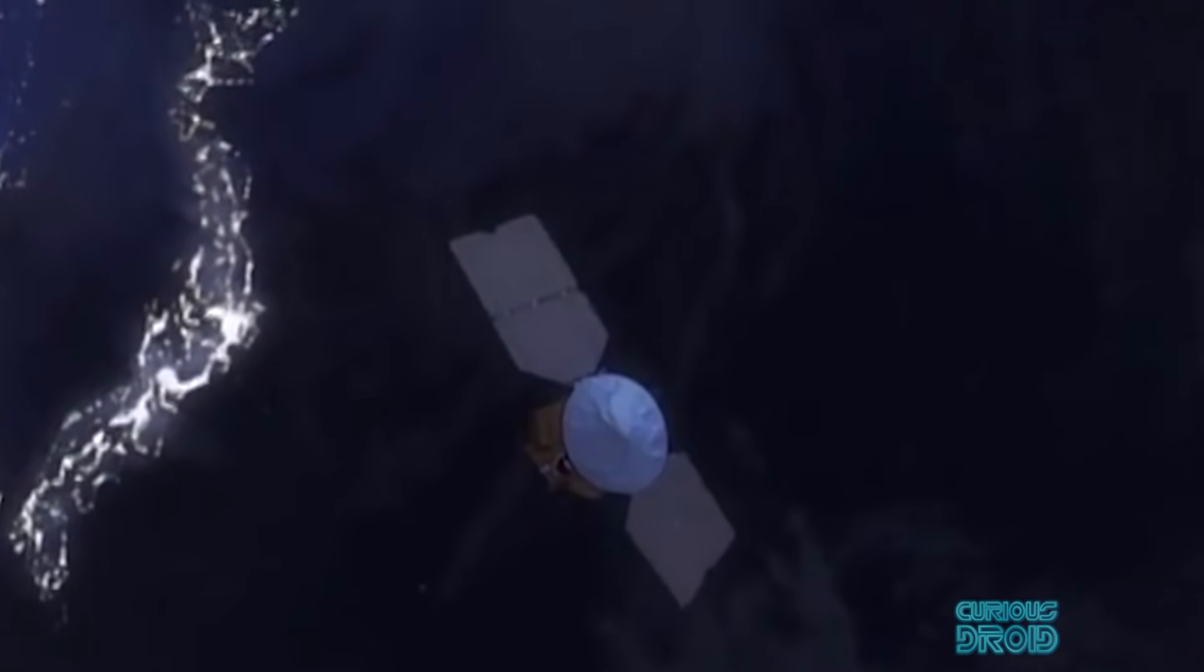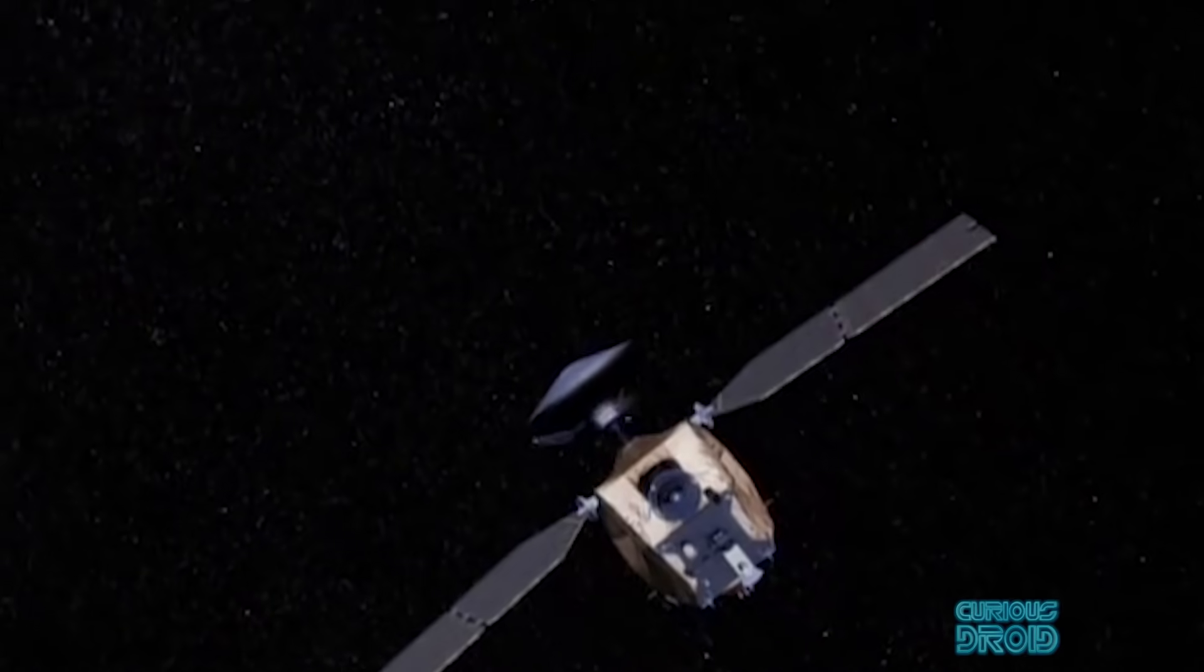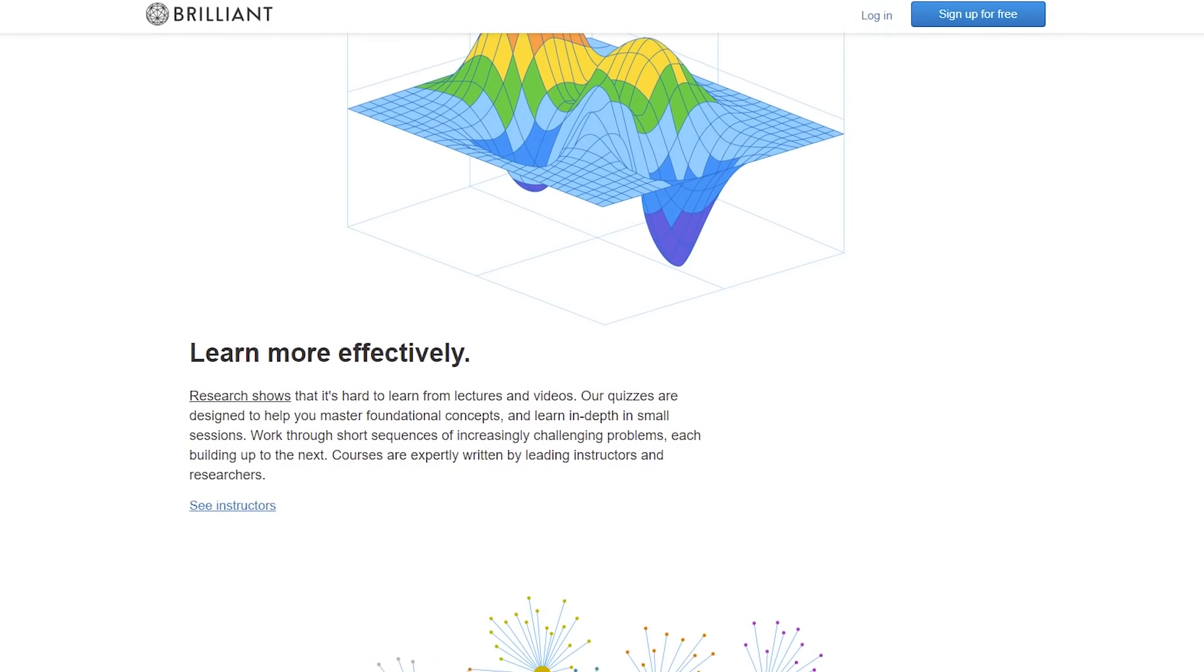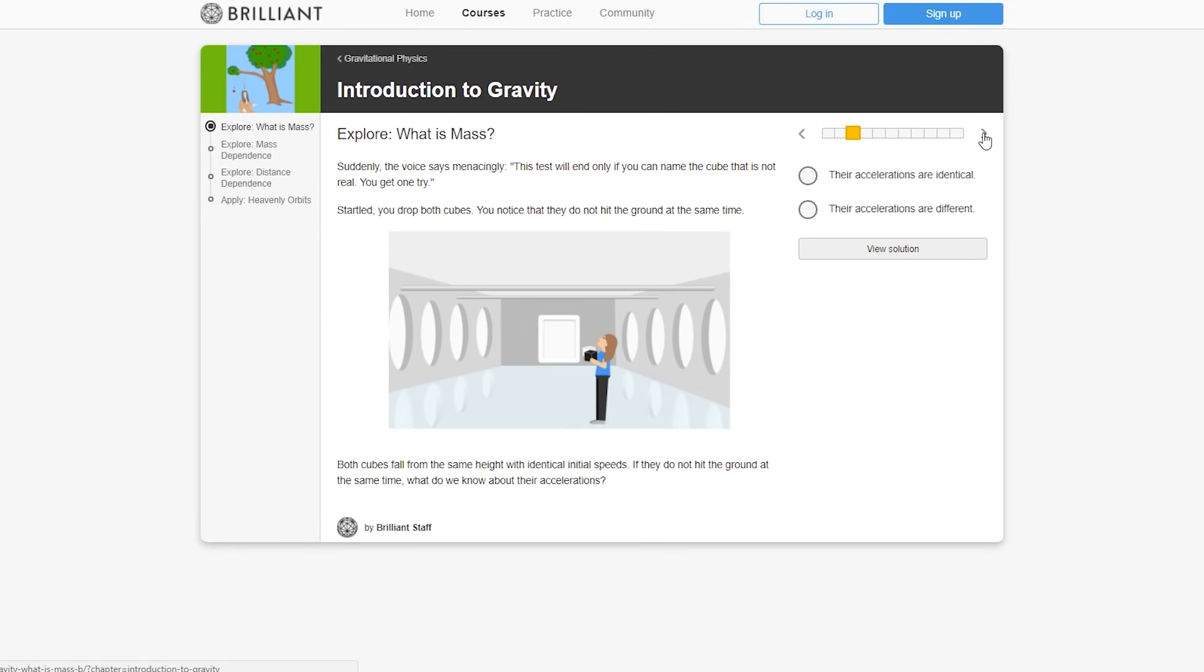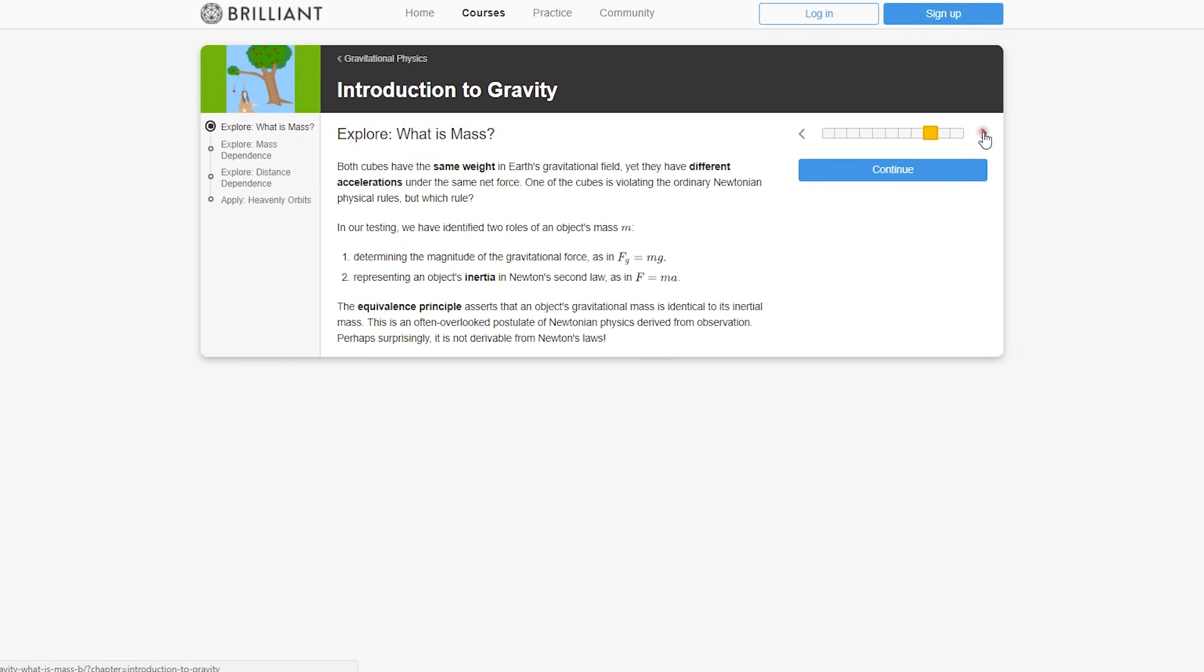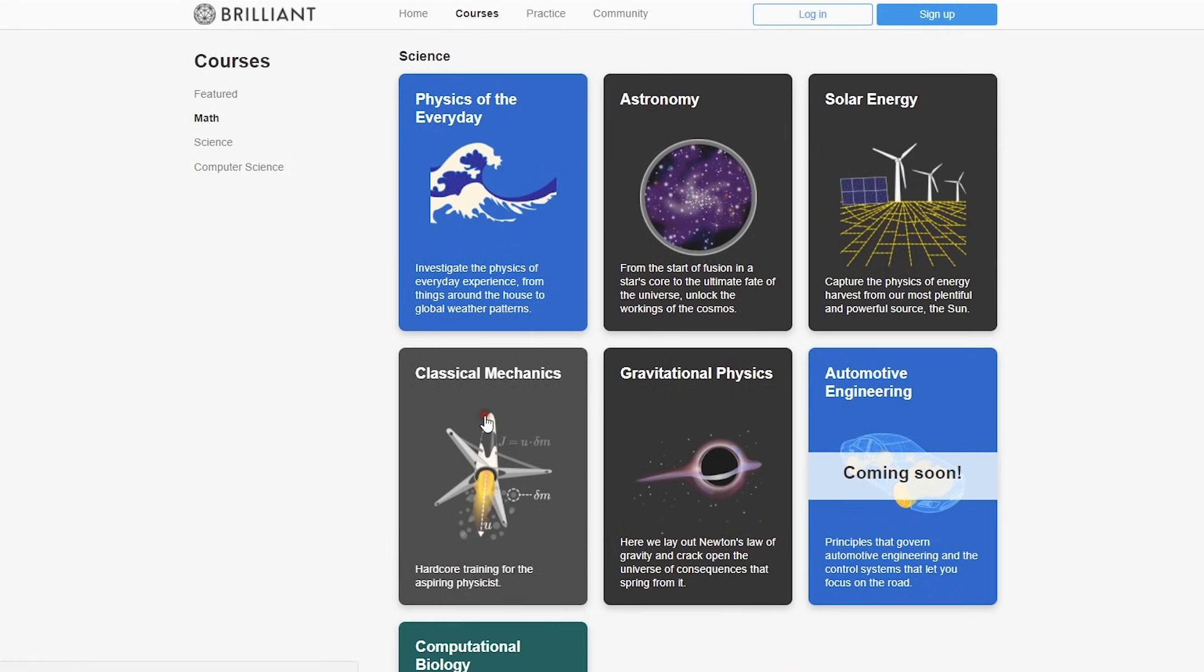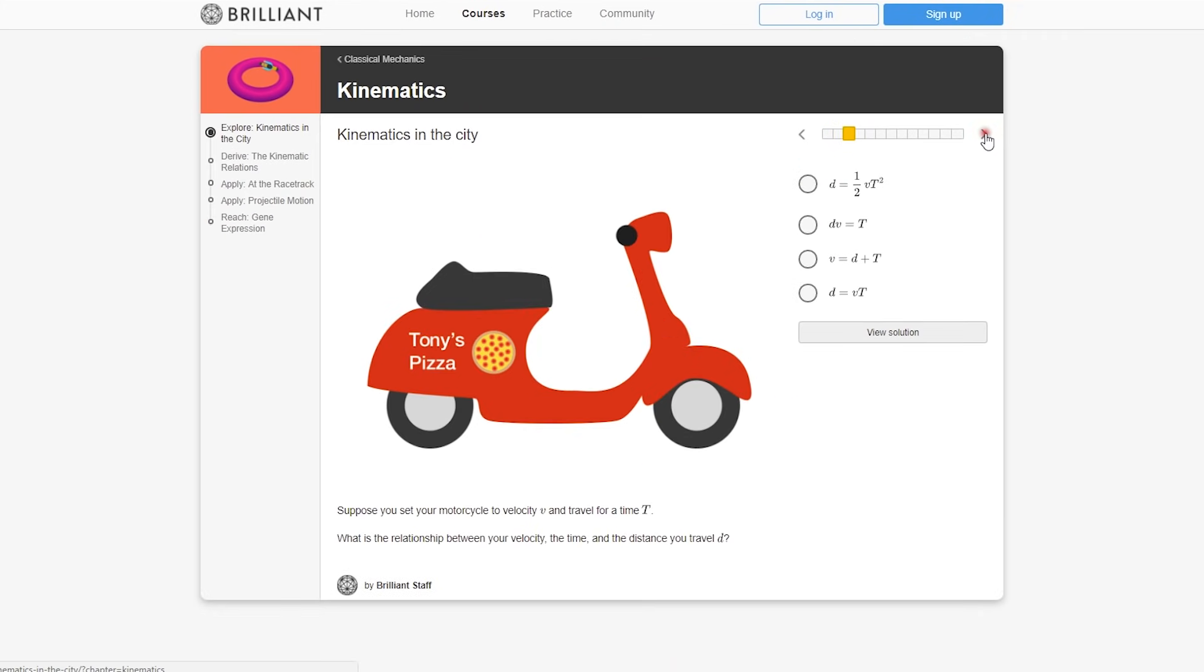If you've ever wondered what it takes to calculate the route for a Martian probe, well the guys over at brilliant.org can help you. Brilliant is an interactive problem-solving website where you get to learn by solving real-world problems and think like a scientist or astronomer. There are tons of problem-solving courses on things like gravitational physics that underpin the motion of the planets, or you can try your hand at astronomy and do things like finding out the size of the universe, and if you're into rockets and stuff, you can try classical mechanics to work out how things move around on Earth and in space.